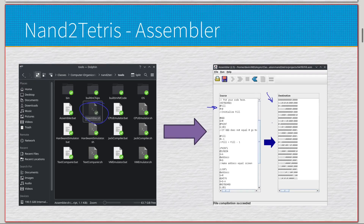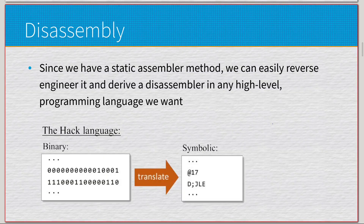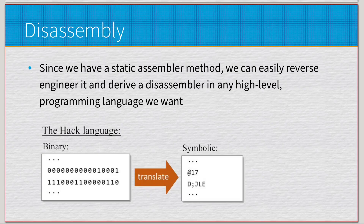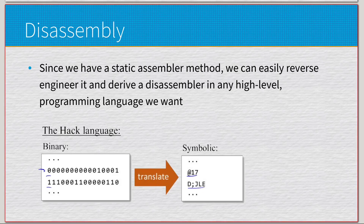What if we want to do that in reverse? Because we have a static assembler method, every single symbolic instruction gets translated to a very specific 16-bit string. We can easily reverse-engineer that and derive a disassembler in any high-level language we want — whether Python, C, C++, C#, Java, etc. — because we know the actual static assembly method. For example, an A-instruction opcode translates to `@17`, and a C-instruction opcode of one translates to `djle`.